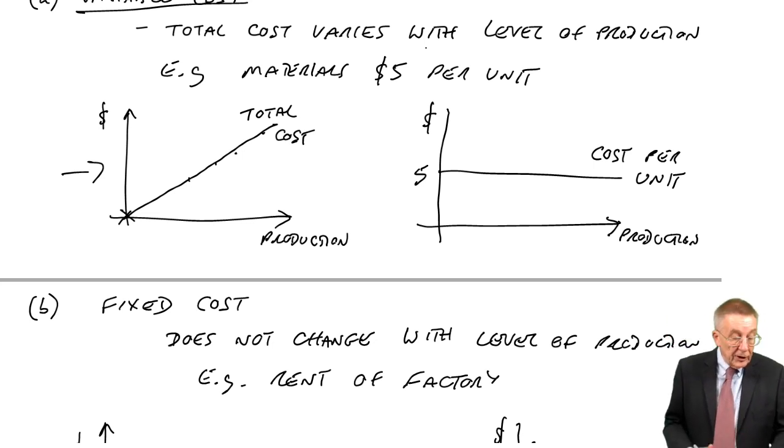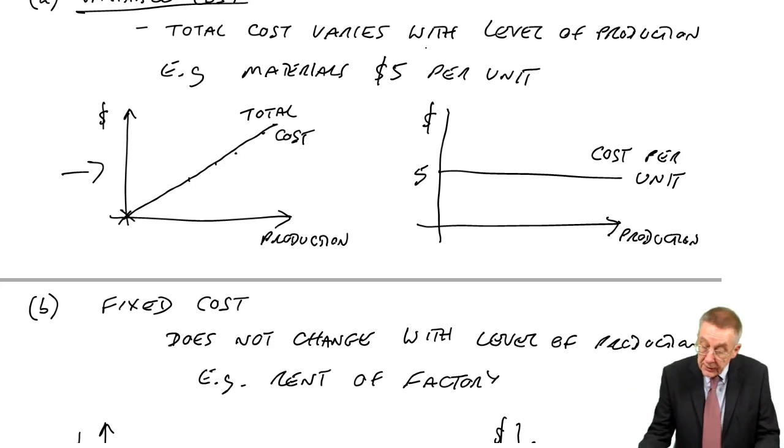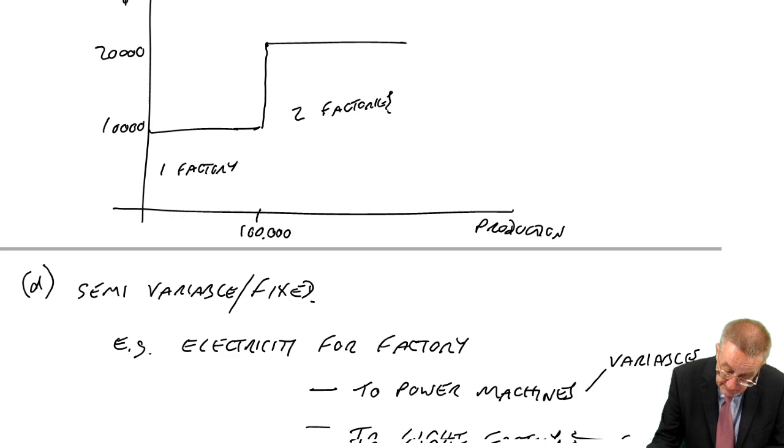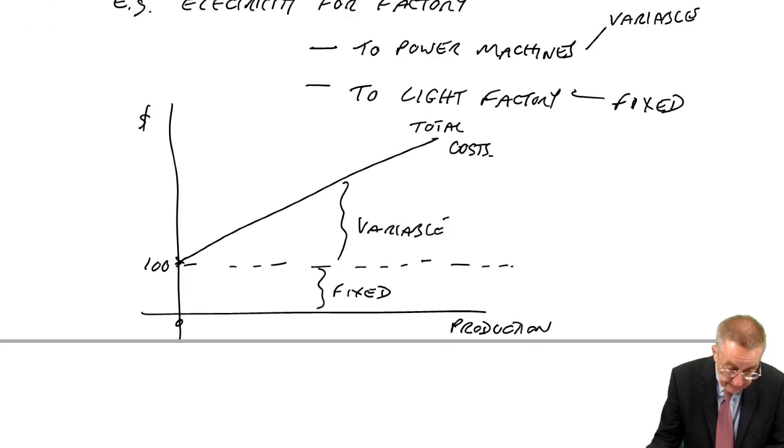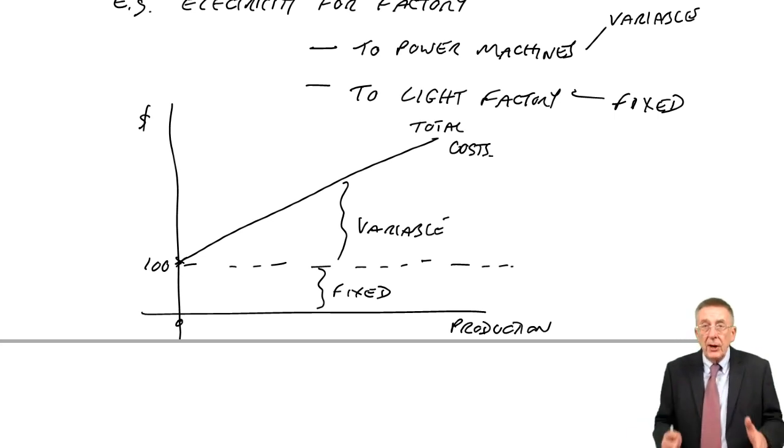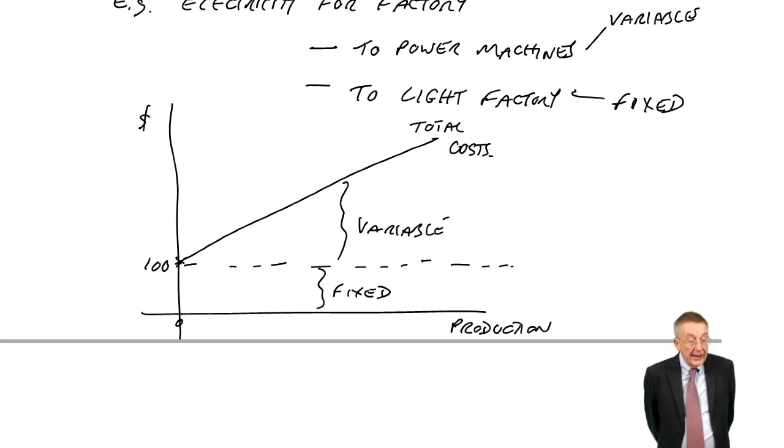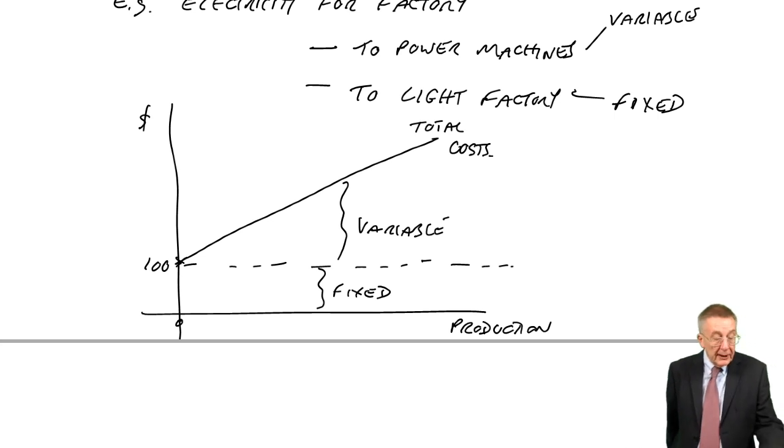Behaviour of manufacturing costs. Assuming this linearity, all costs are either fixed or variable, or a combination of the two, this semi-variable business. Check you agree with what I've written below. Direct costs must be variable. Materials $5 a unit, it's variable. Labour $10 a unit, it's variable. Direct costs must be variable. Whereas indirect costs are overheads, they could be either.